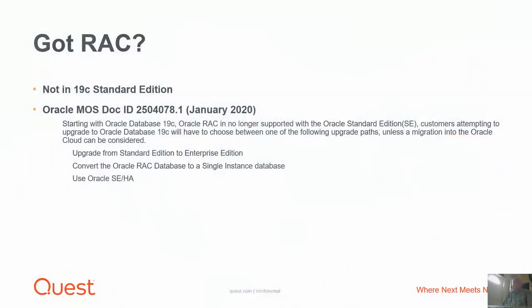Today I'd like to talk to you about disaster recovery and high availability on Oracle 19c Standard Edition. As you probably know, Standard Edition 19c Oracle has discontinued support for RAC. Here's the My Oracle Support article that talks about that, and they give you three choices. You can upgrade from Standard Edition to Enterprise Edition and pay Oracle lots of money. You can convert your Oracle RAC database to a single instance database and lose all the hard work, configurations, and benefits you're getting from RAC. Or you can use Oracle's Standard Edition high availability solution, which we'll talk about in a minute.